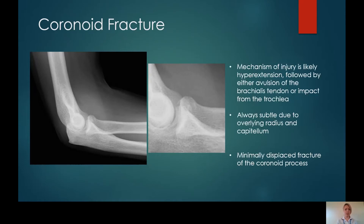Coronoid fractures are frequently missed elbow injuries, because of the overlying bony structures. This is an example of the importance of forcing your eye around the bony contours of each bone. If you look down the distal humerus, you won't see anything. The round radial head — you won't see anything. Then force your eye around the contours of that ulna, and then you should be able to see that very subtle disruption of the coronoid. They are always subtle, so always make sure that you scrutinise this part of the X-ray on every elbow.